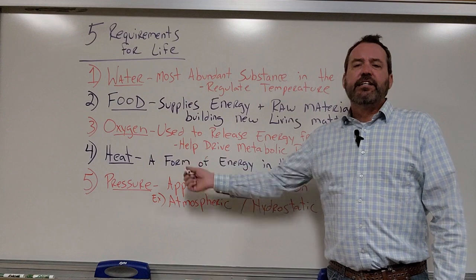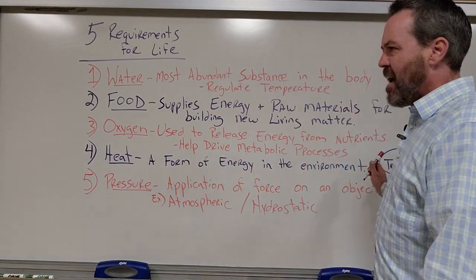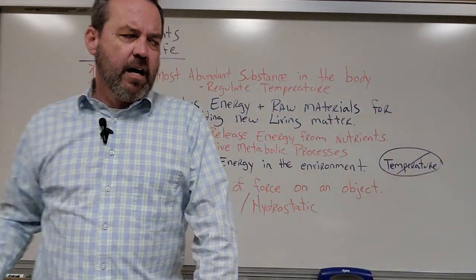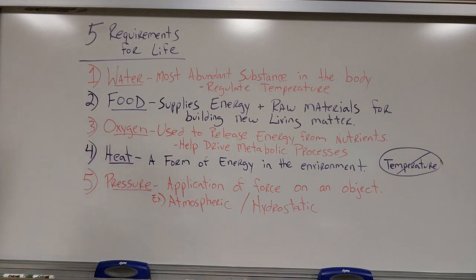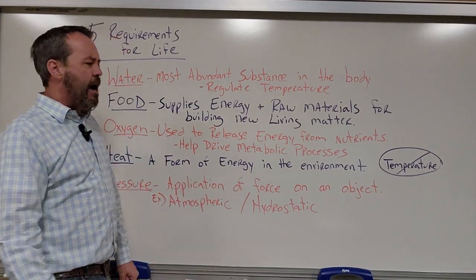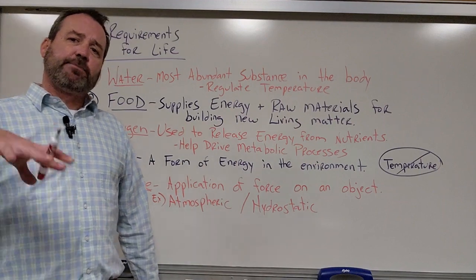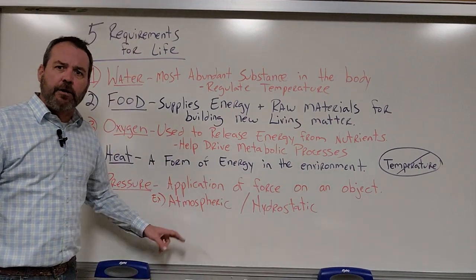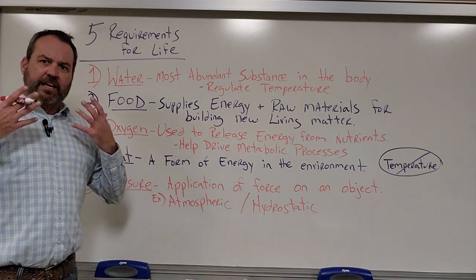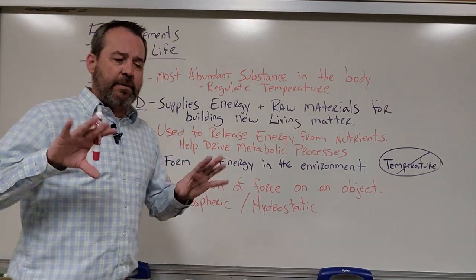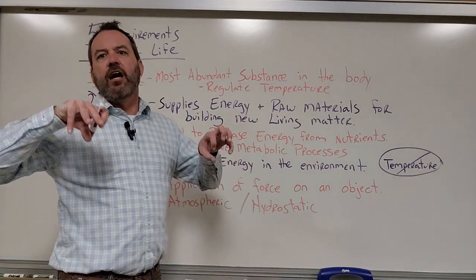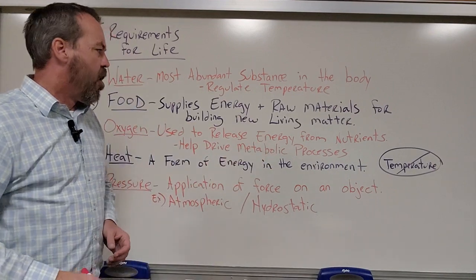We can use that energy released from nutrients to help drive metabolic processes. Heat is defined as a form of energy in the environment — not to be confused with temperature. Temperature is a measurement of heat; heat is a form of energy in the environment. And pressure is defined as an application of force on an object. We have atmospheric pressure — the weight of the air — which comes into play in inhalation and exhalation. We've also got hydrostatic pressure, which is similar to blood pressure, used to help keep blood inside our vessels.